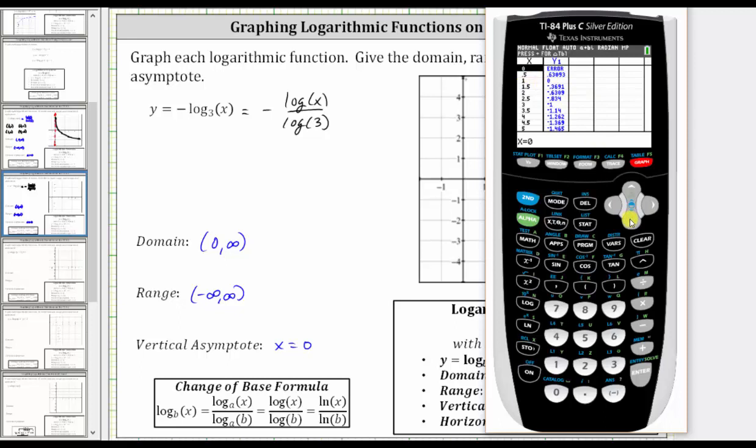So again, here we have one comma zero, three comma negative one. And let's also use six comma approximately negative 1.63.